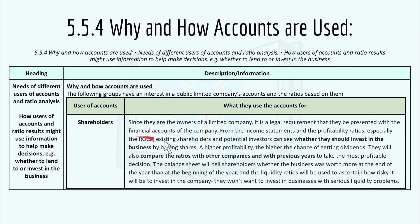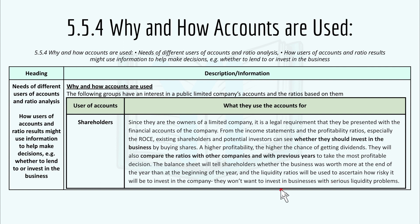Shareholders, as owners of a limited company, are legally required to receive the company's financial accounts. From the income statement and profitability ratios — especially the Return on Capital Employed — shareholders and potential investors can see whether they should invest by buying shares. Higher profitability means a higher chance of receiving dividends. They will compare ratios with other companies and previous years. The balance sheet shows whether the business was worth more at the end of the year, and liquidity ratios indicate how risky it is to invest in the company.